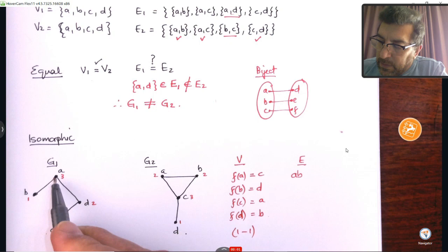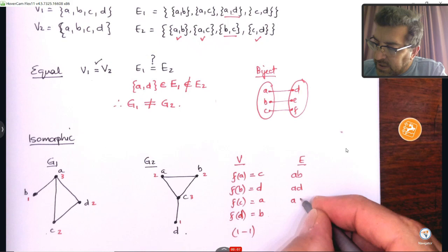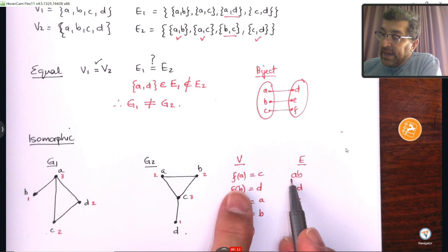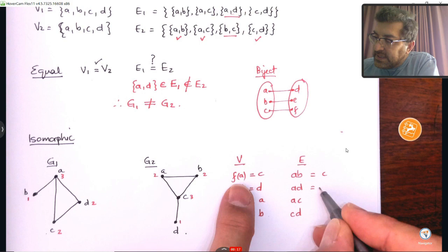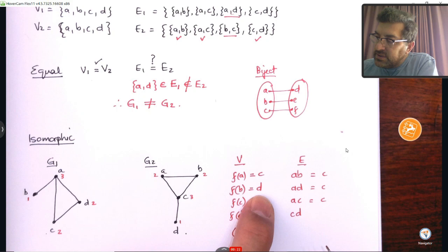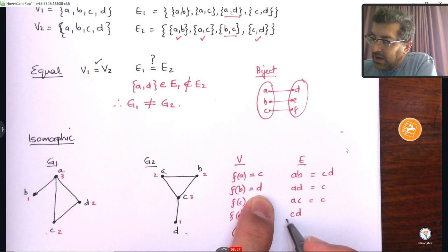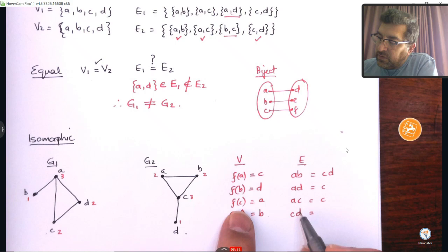Now, we need to look at the edge set. The edge set has A,B in graph 1. Then it has A,D in graph 1. It has A,C in graph 1 and also C,D. Now, I can work with my mapping. A maps onto C in the second graph. So, everywhere where there's an A, I'm going to put a C. Okay, then B maps onto D. Everywhere where there's a B, I'm going to put a D. There's no other B here.